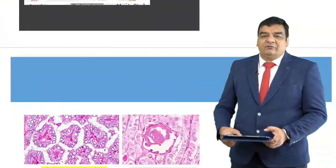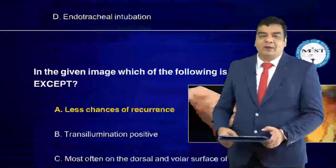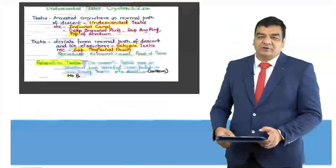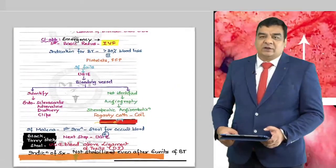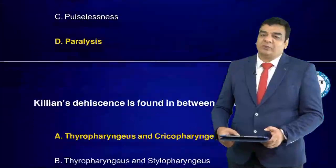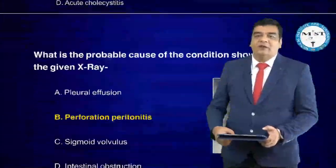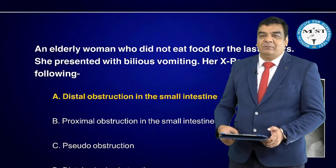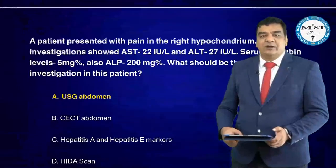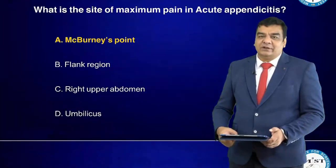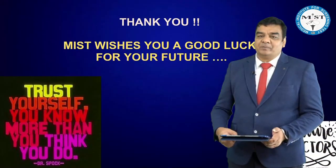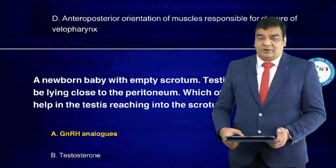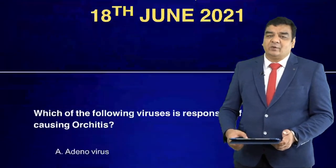On 18 June 2021, we were able to summarize approximately 50 questions from surgery. There are overlapping questions with radiology, dermatology, pathology, and anatomy as well. If we take a look at the distribution of the FMG NB pattern, they say 32 questions will be from surgery, and this time they lived up to that expectation — we got more than 32 questions, especially from the core surgery section. We have also tried to incorporate integrated questions in surgery.